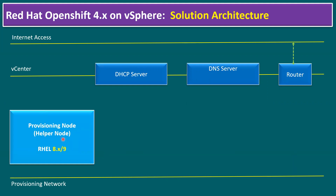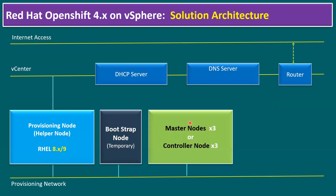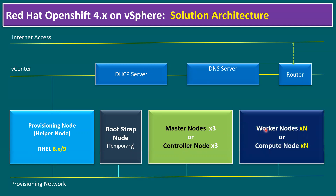We also need one helper node VM running Red Hat Enterprise Linux, either 8-series or 9-series — we also call it a bastion node or provisioning node. Using this bastion node, once we initiate the OpenShift cluster creation, it will create a temporary bootstrap node. Using this bootstrap node, it will deploy the three master nodes — master nodes we also call control plane nodes — and it will configure worker nodes as well, which we can also call compute nodes. This is the high-level solution architecture overview. Communication is established between master nodes, worker nodes, and also external internet access.